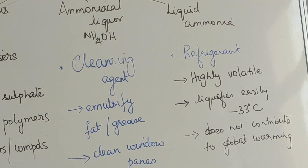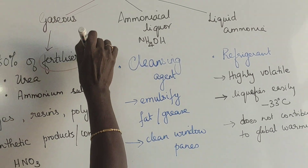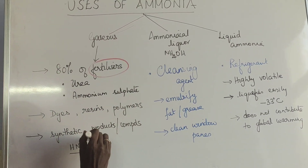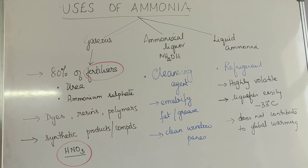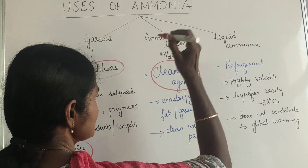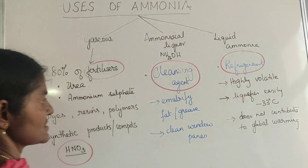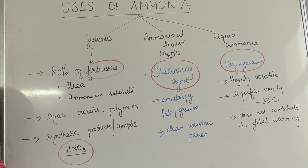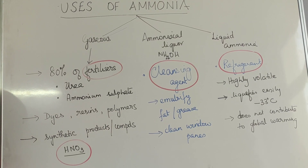So the important uses are: fertilizers, manufacture of nitric acid, used as a cleansing agent, and used as a refrigerant. These are the uses of ammonia, and with that we finish this lesson on ammonia.